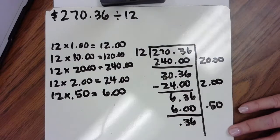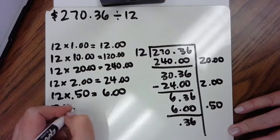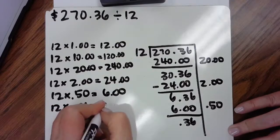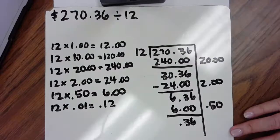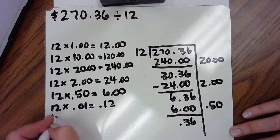Alright, so we've got to get really small. Students know that 12 groups of a penny is $0.12, right? So they may choose to pull that out a set at a time...